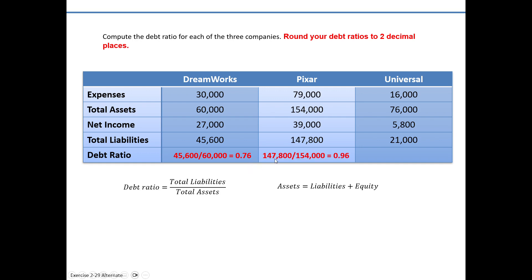For Pixar, the debt ratio is 147,800 in liabilities divided by 154,000 in assets — almost one, or nearly 100% — giving us 0.96, or 96%. For Universal, it's 21,000 in liabilities divided by 76,000 in assets, which is much lower than the others: 0.28, or 28%.